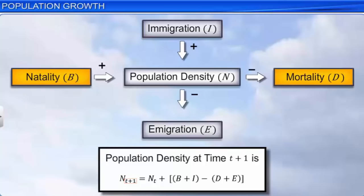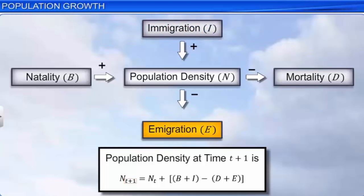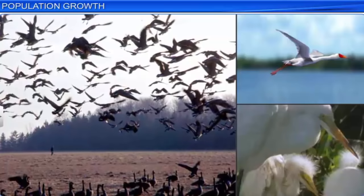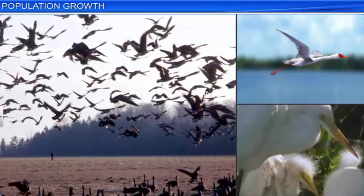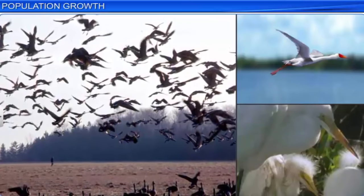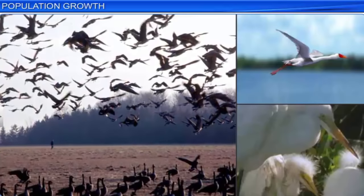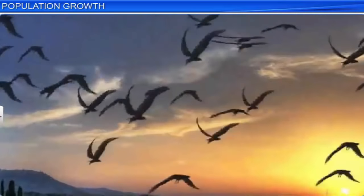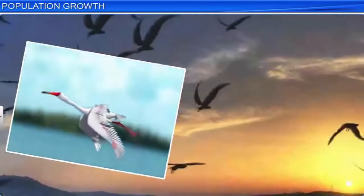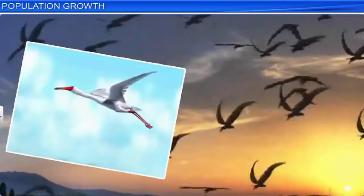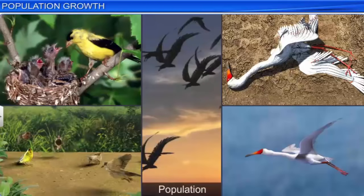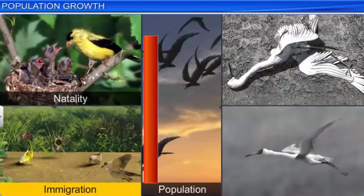Now, let's consider this flow diagram, where N is the population density at time T. The density at time T plus 1 can be calculated as shown. Although the number of births and deaths greatly influence population density, in some cases immigration and emigration assume importance. For instance, if a newly formed habitat is colonized by great egret birds, the immigration of the egrets has a greater significance in determining the population density, rather than natality in this population. Likewise, if most of these birds fly to another wetland, then the emigration of these birds has a significant contribution to determining population density, rather than deaths in this population.